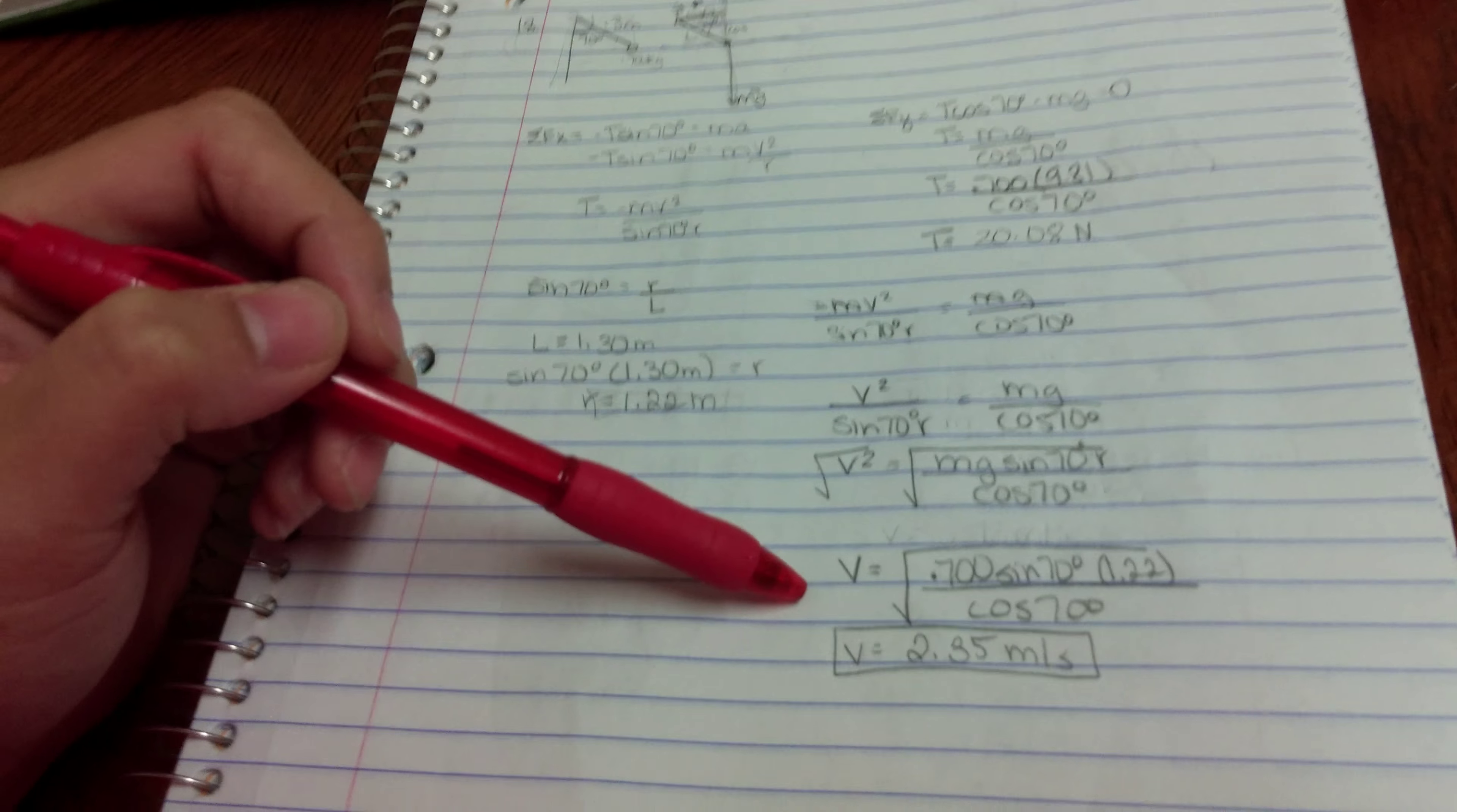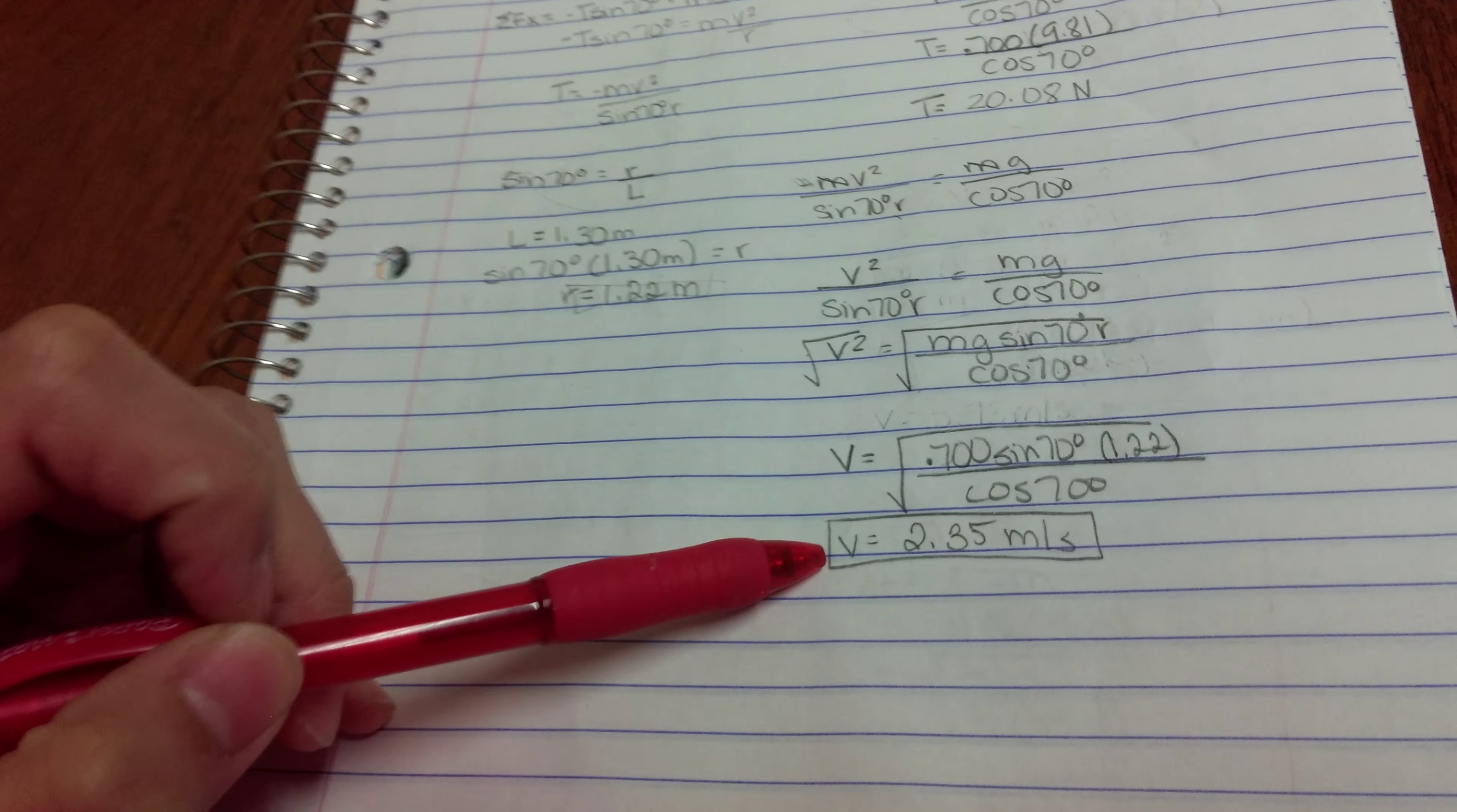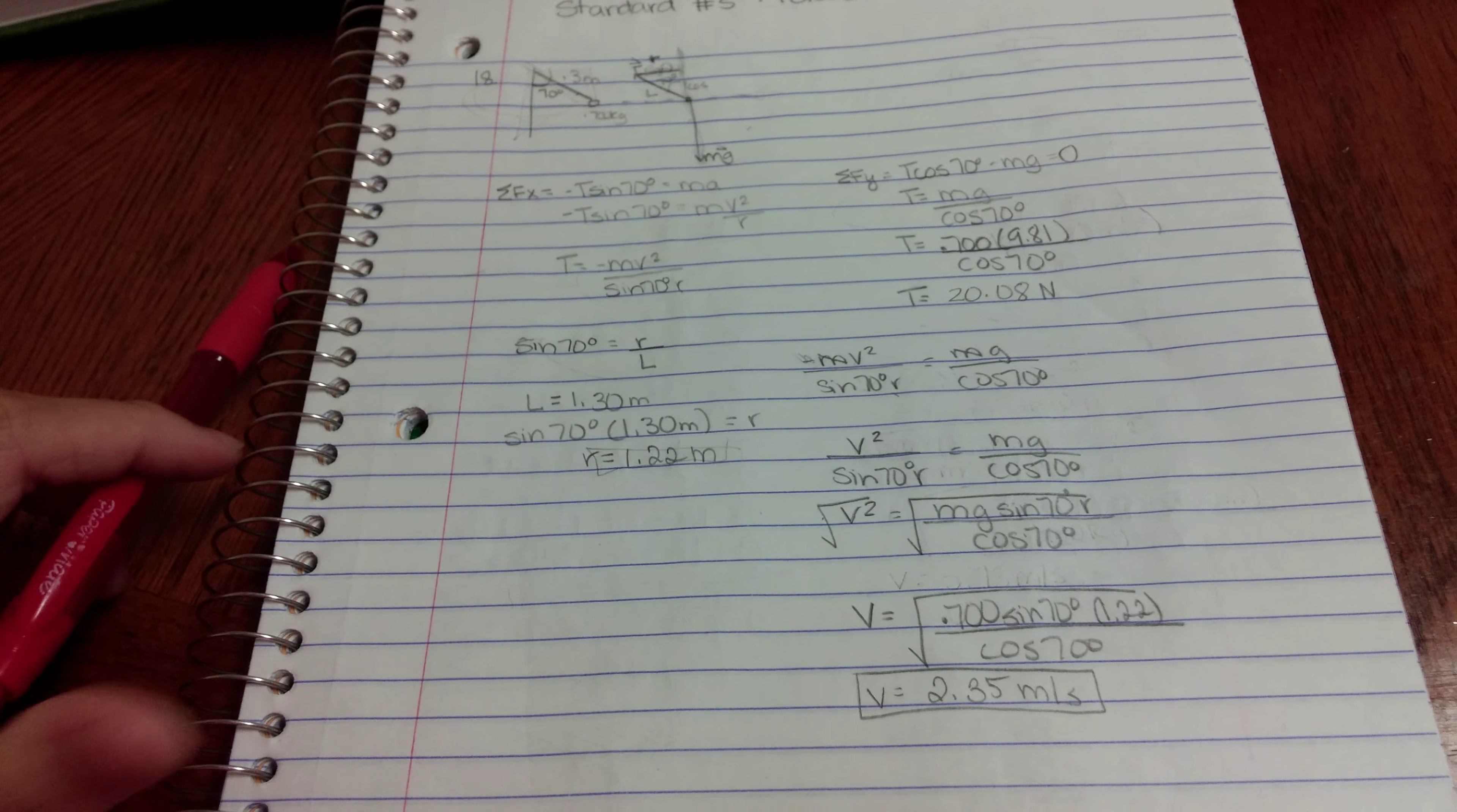And then now I can find my tangential speed because it's the only missing variable. So I plugged in all the numbers. And then I came out with the tangential speed of the ball is 2.35 meters per second. And that was number 18 of chapter 5.